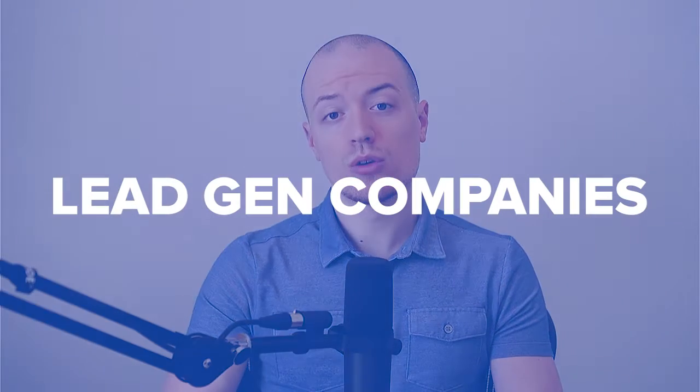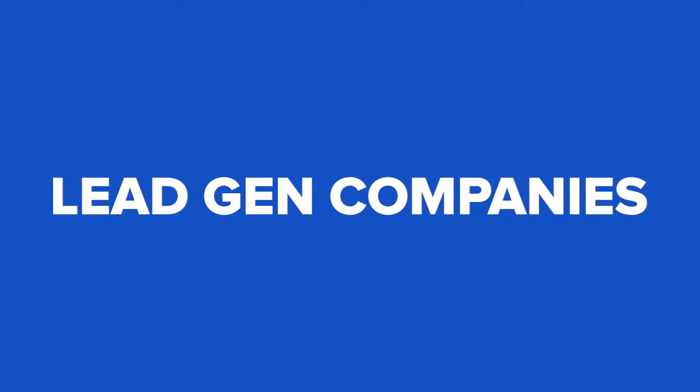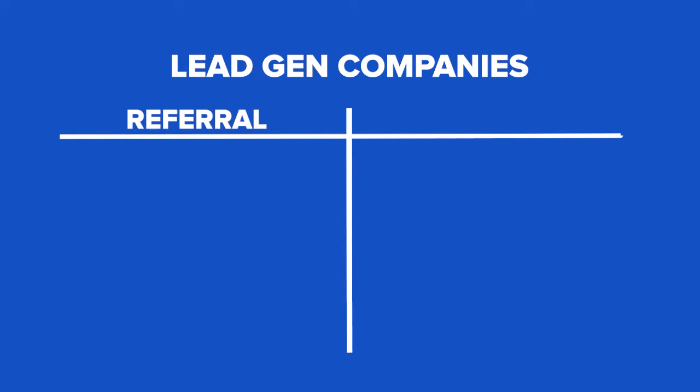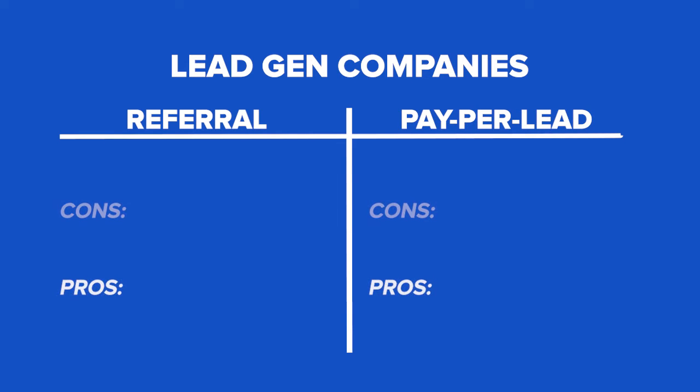The second thing you can do right away is partner up with an existing lead generation company. There are different types of lead generation companies out there, and depending on where you're at in your real estate business, there are really two different buckets of lead generation programs. You have your referral or commission-based programs where you simply pay upon closing, and then you have pay-per-lead lead generation systems. Both have their pros and cons, so let's dive through those.